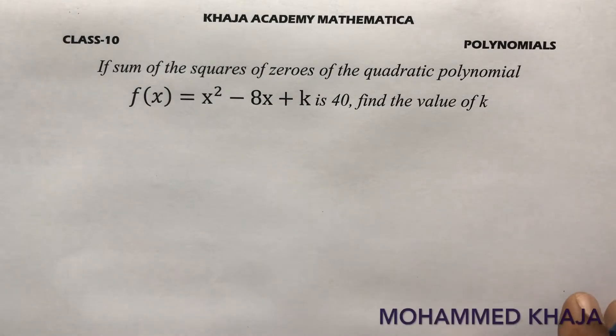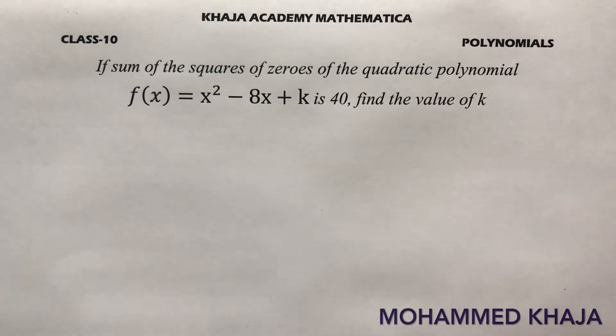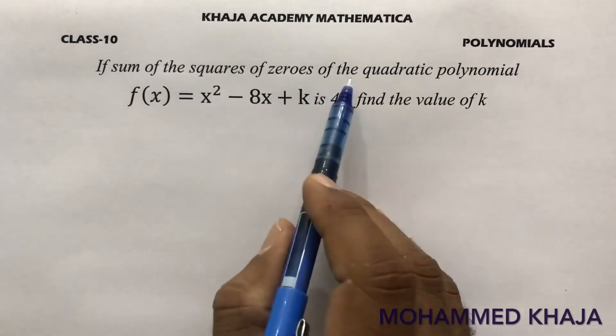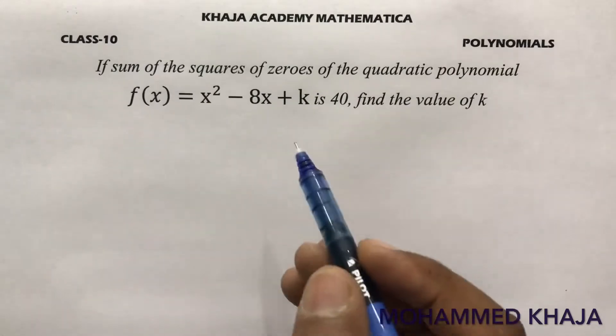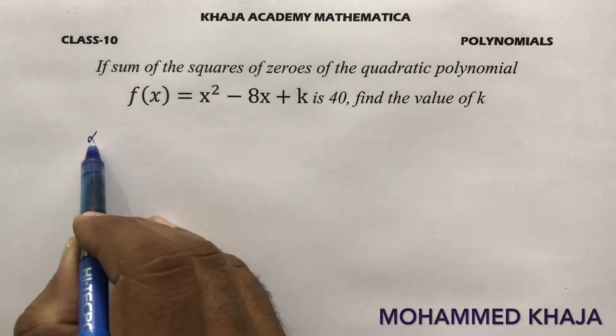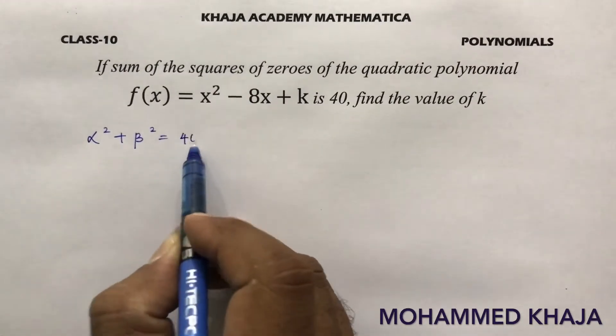If sum of the squares of the zeros of the quadratic polynomial f(x) = x² - 8x + k is 40, find the value of k. Sum of the squares of the zeros. So here let the two zeros be alpha and beta. They gave alpha² + beta² = 40.